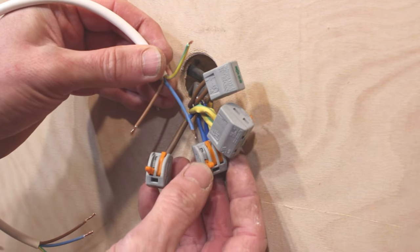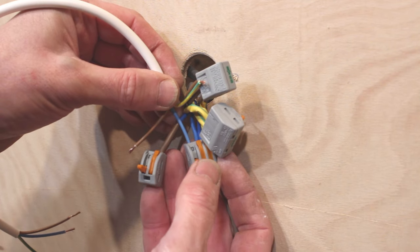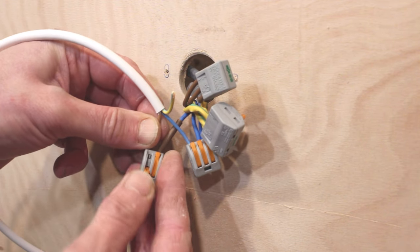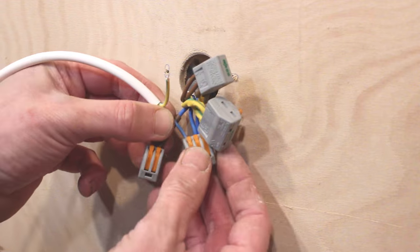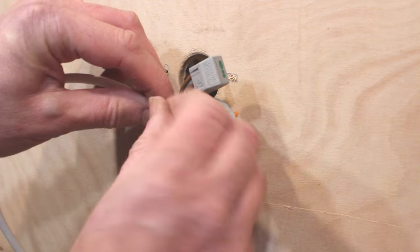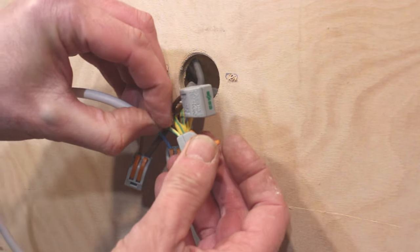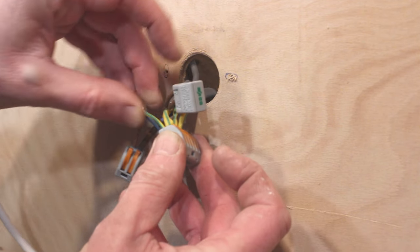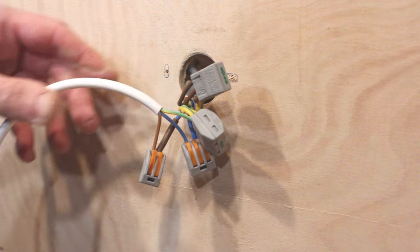So let's take the piece of flex. Attach the neutral to the neutral block. And this switch live part of it to the switch live block making sure everything is secure. In this case we have got an earth so we'll connect up the earth to the main earth block. Like so.